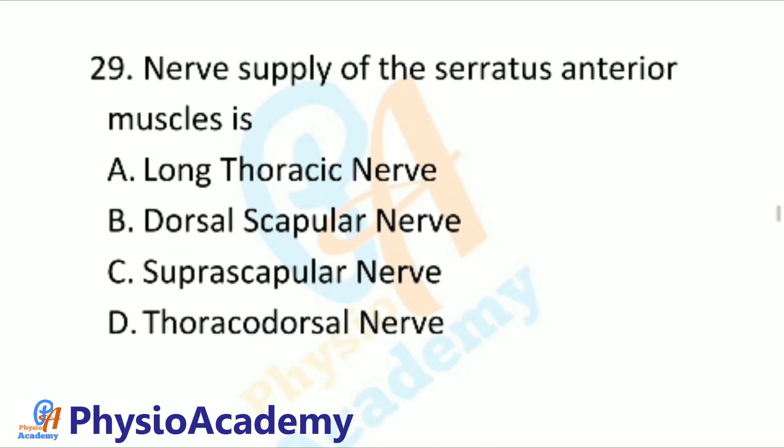Question number 29: The nerve supply of the serratus anterior muscle is: Option A: Long thoracic nerve. Option B: Dorsal scapular nerve. Option C: Suprascapular nerve. Option D: Thoracodorsal nerve.